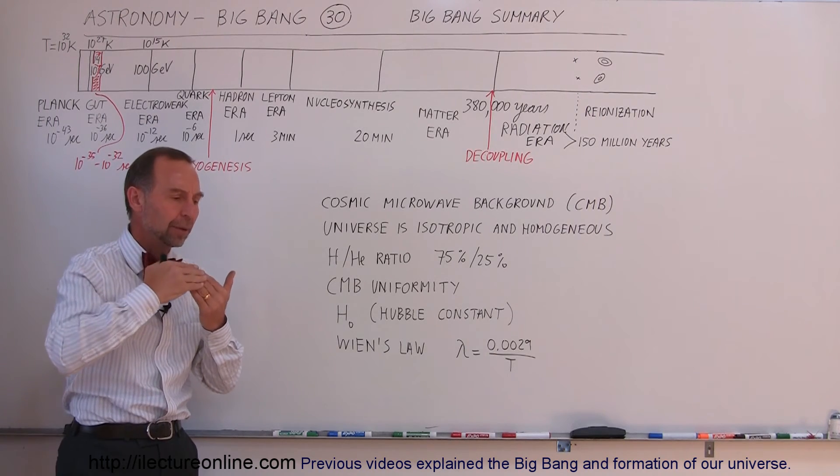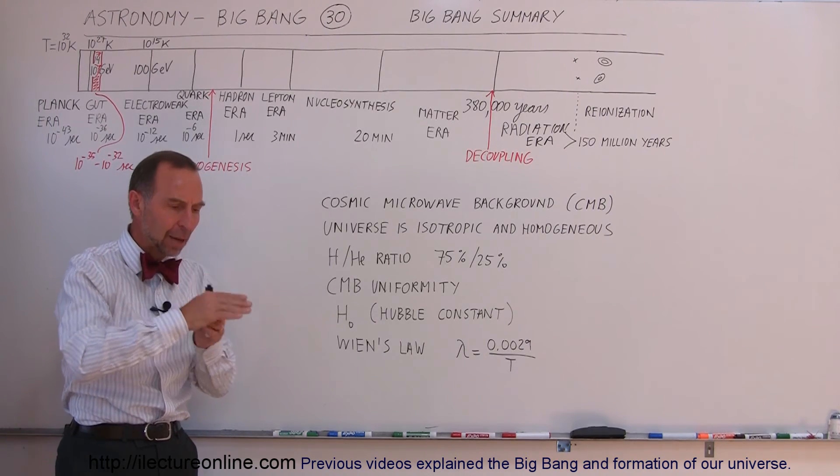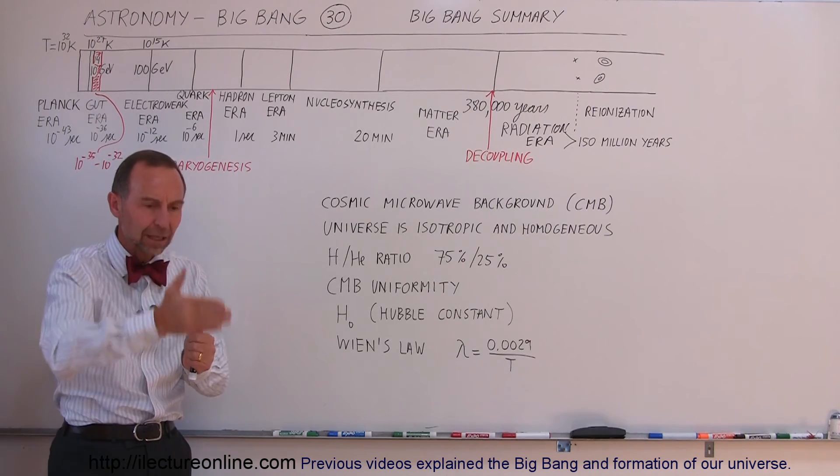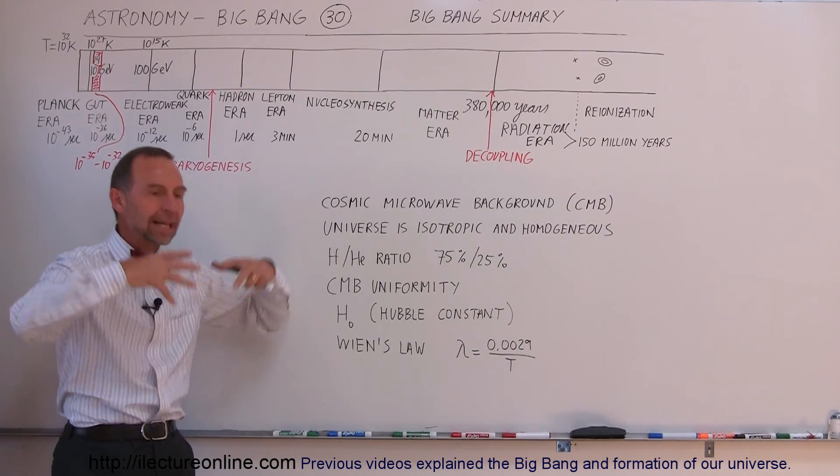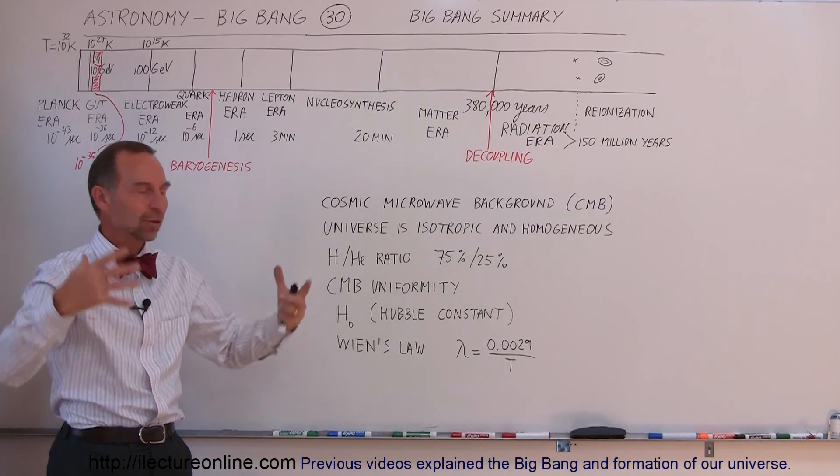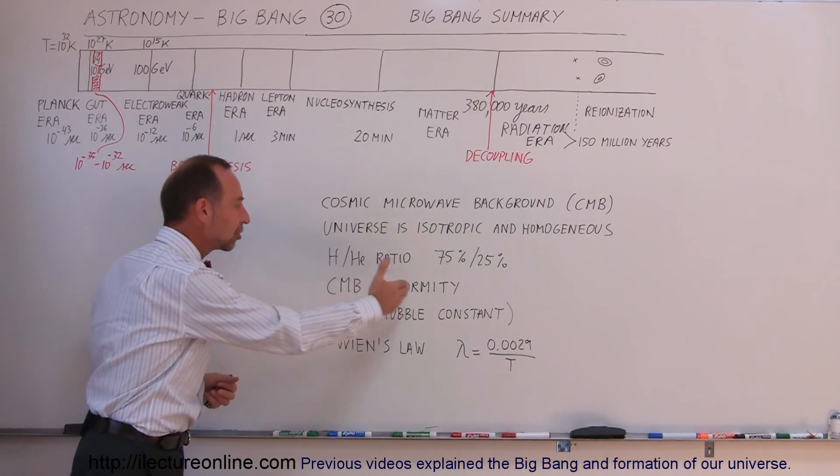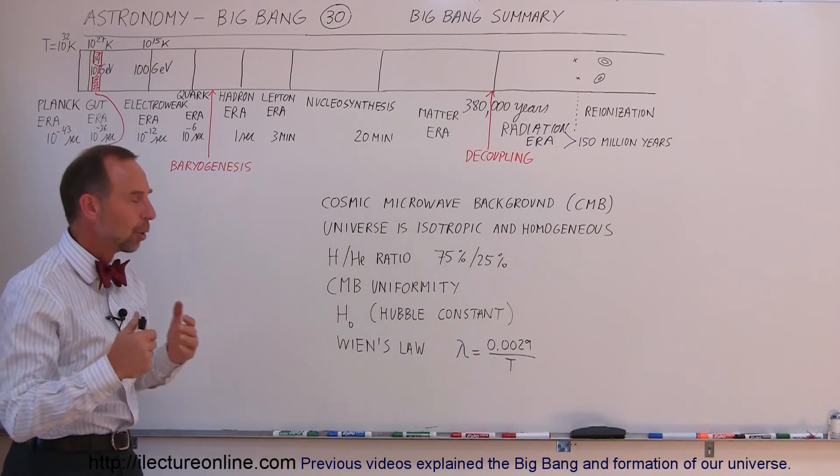But again, if we go to the theory of the Big Bang, and we see that at certain moments in the Universe's existence, the temperature was just right, where all the radiation would be set free at the same time throughout the Universe, you can see how there would be that extreme uniformity from all over the Universe.